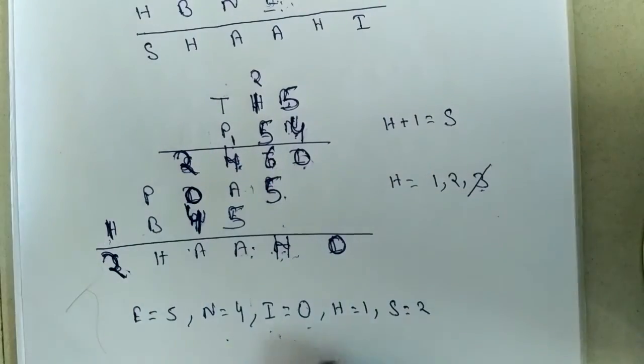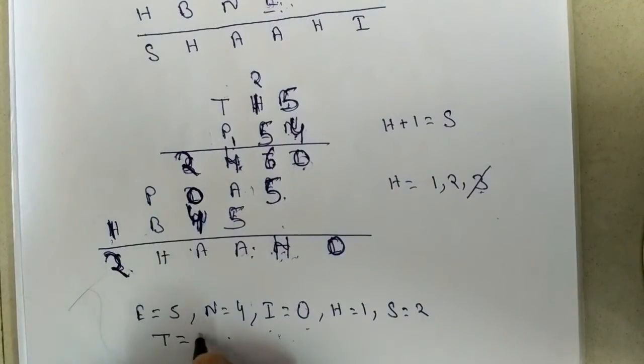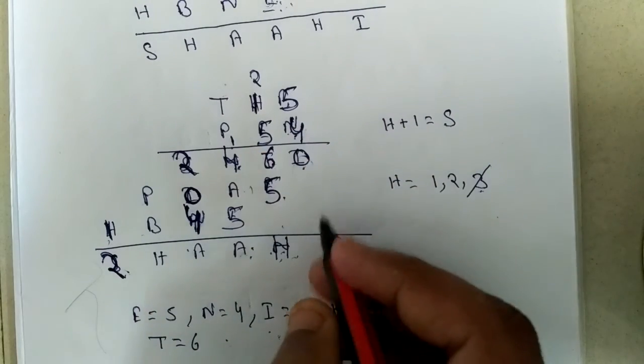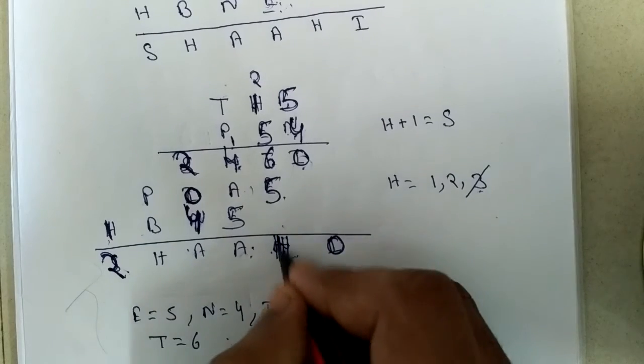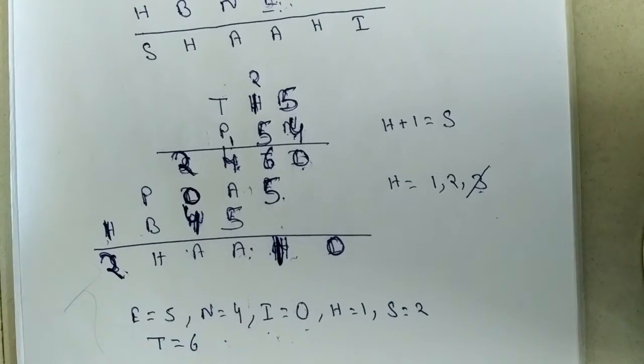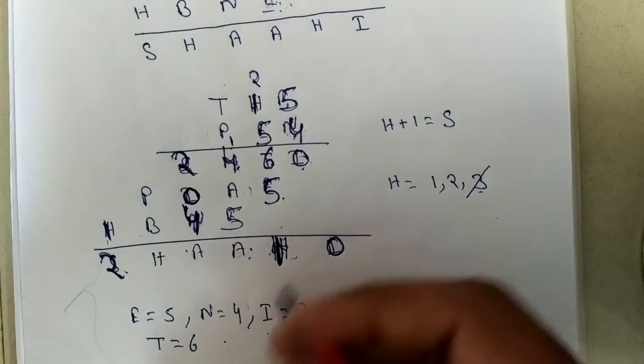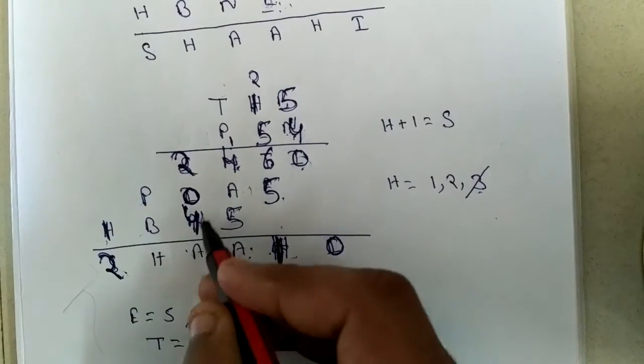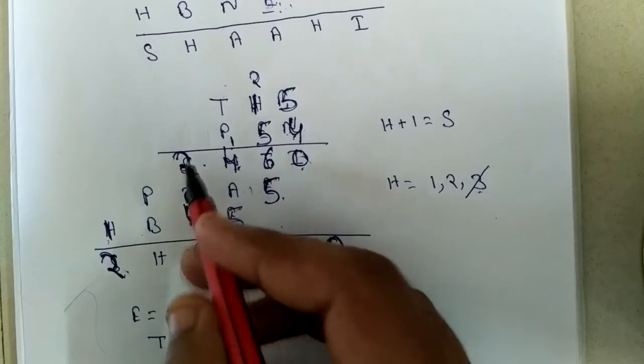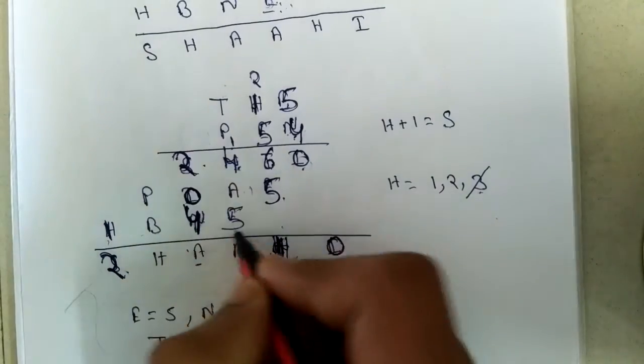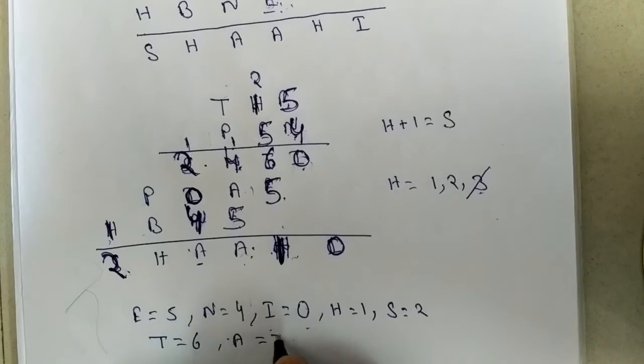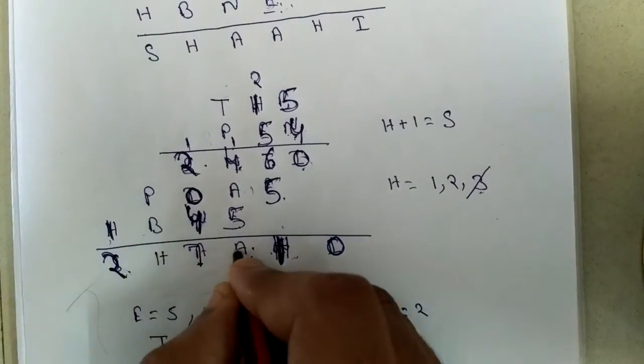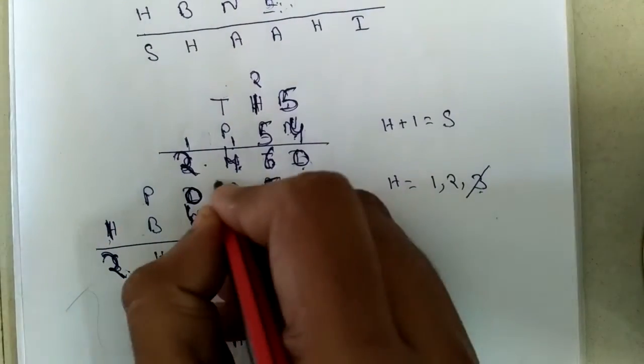Then T equal to 6. 4 plus 2 equals 6, but A means once comes from here, A must be 7.